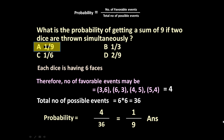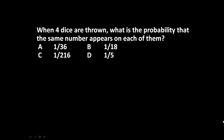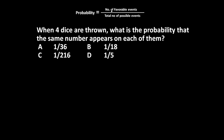Let us solve one more similar type of problem. When four dice are thrown, what is the probability that the same number appears on each of them? Four dice are thrown and we want the same number to appear on each. For solving this, let us again write the formula: probability equals number of favorable events divided by total number of possible events.